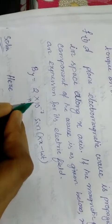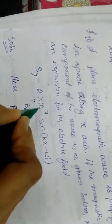B0 will be 2 into 10 to the power minus 7.